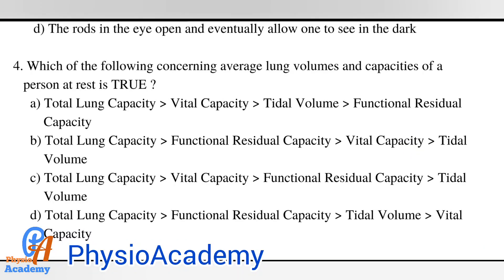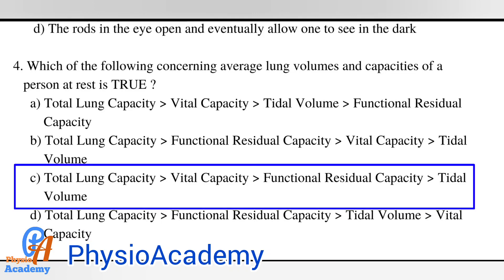Question number four: which of the following concerning average lung volumes and capacities of a person at rest is true? Option A: total lung capacity, then vital capacity, tidal volume, functional residual capacity. Option B: total lung capacity, then functional residual capacity, then vital capacity, then tidal volume. Option C: total lung capacity, vital capacity, then functional residual capacity, then tidal volume. Option D: total lung capacity, functional residual capacity, tidal volume, and then vital capacity. The correct answer is option C: total lung capacity, then vital capacity, then functional residual capacity, and tidal volume.